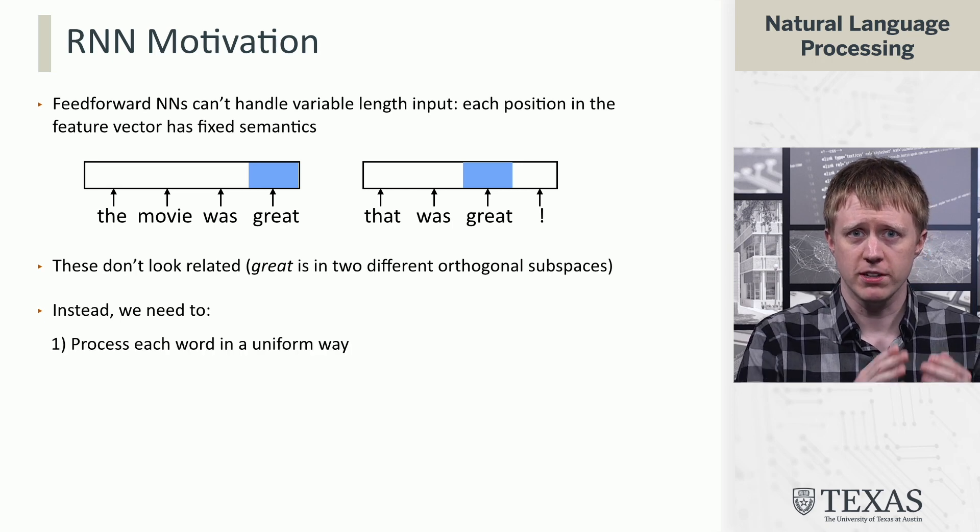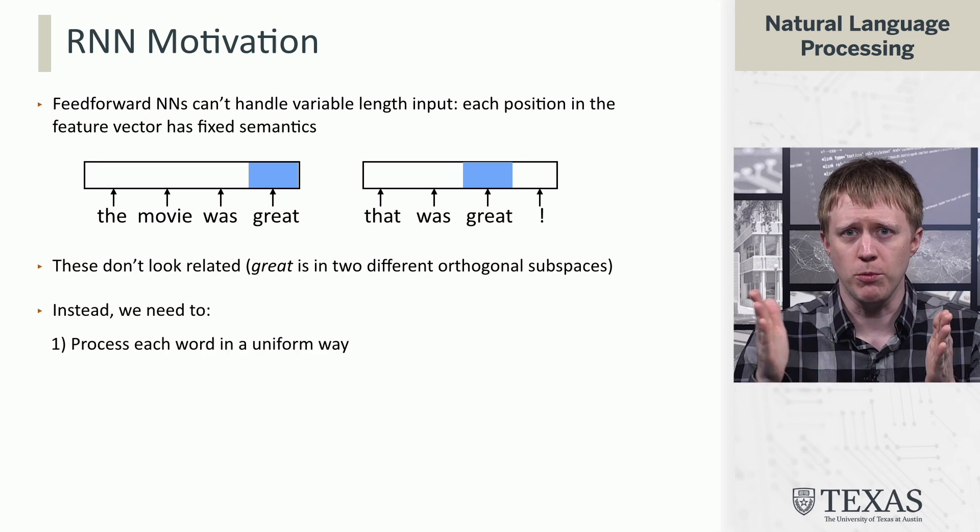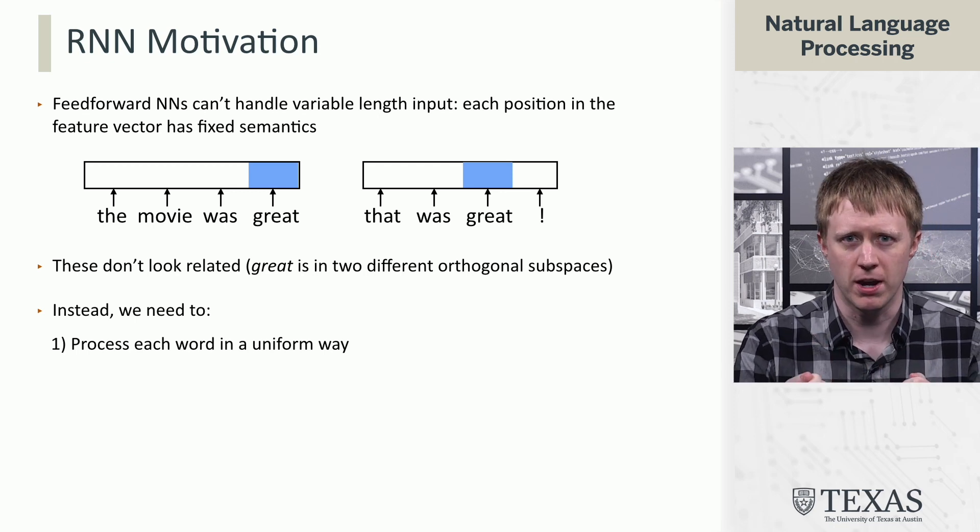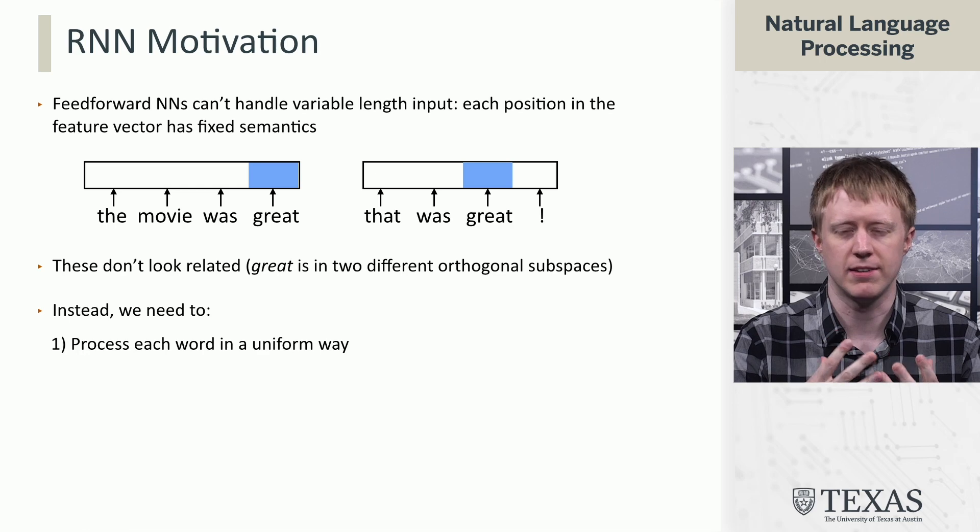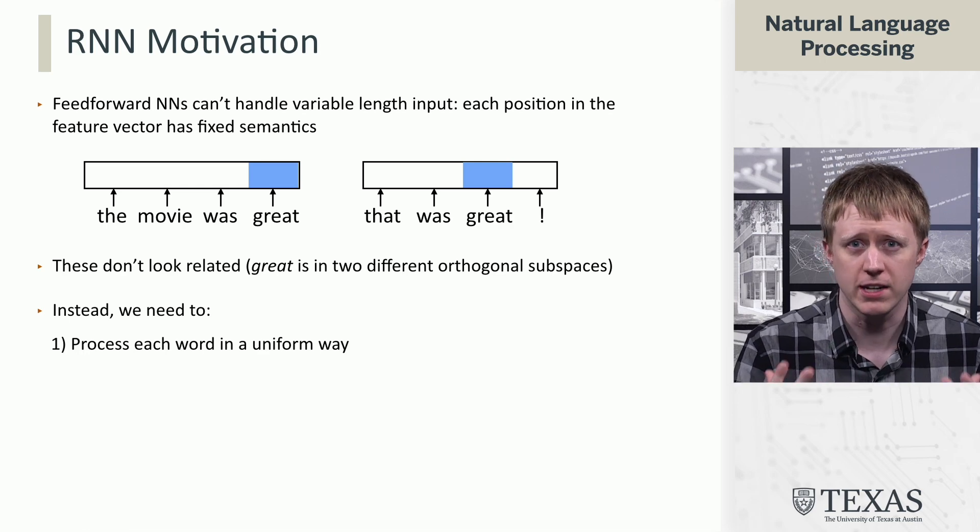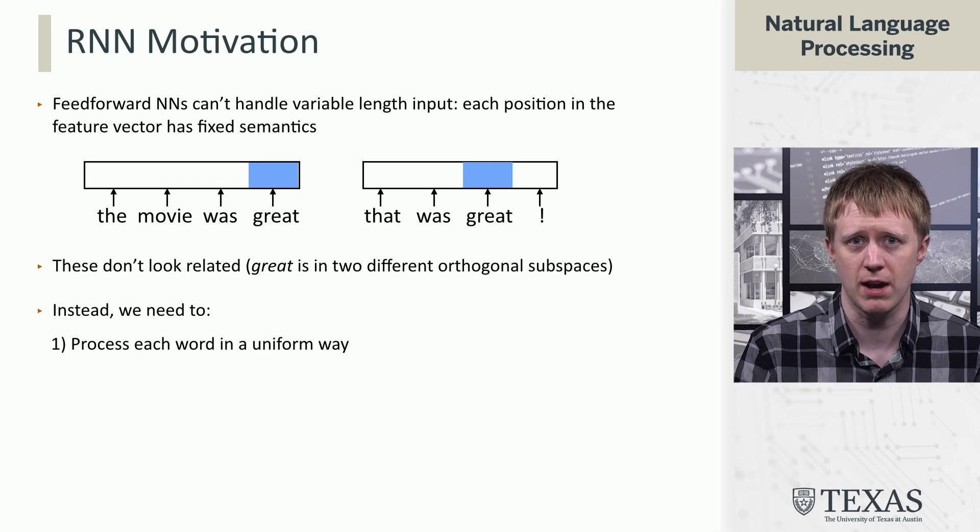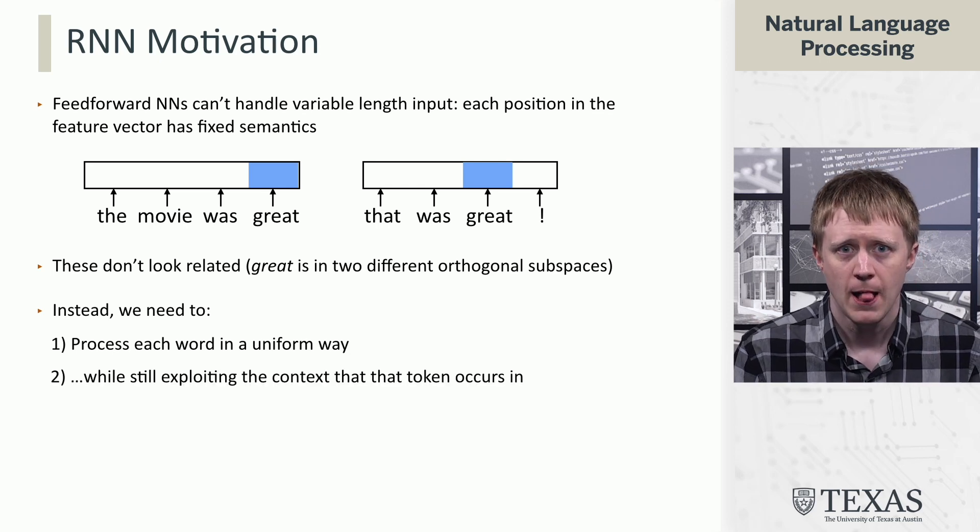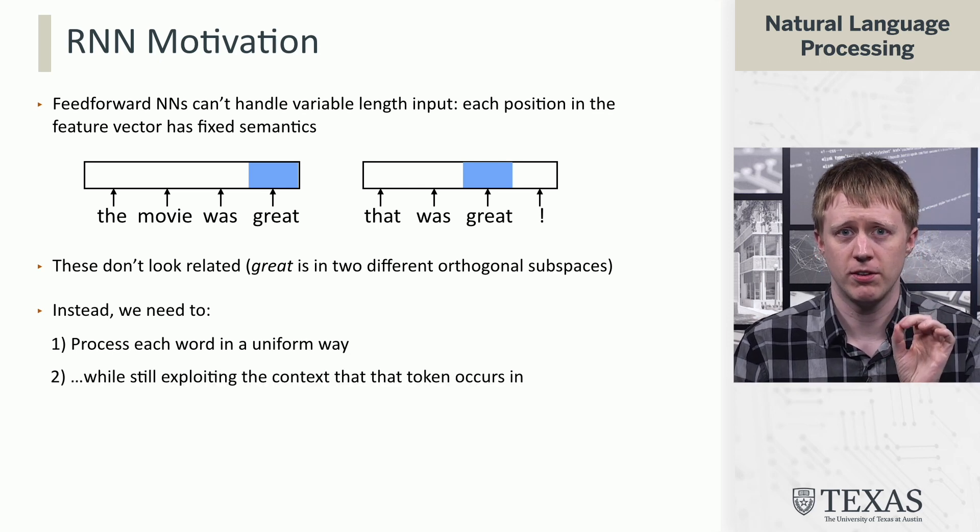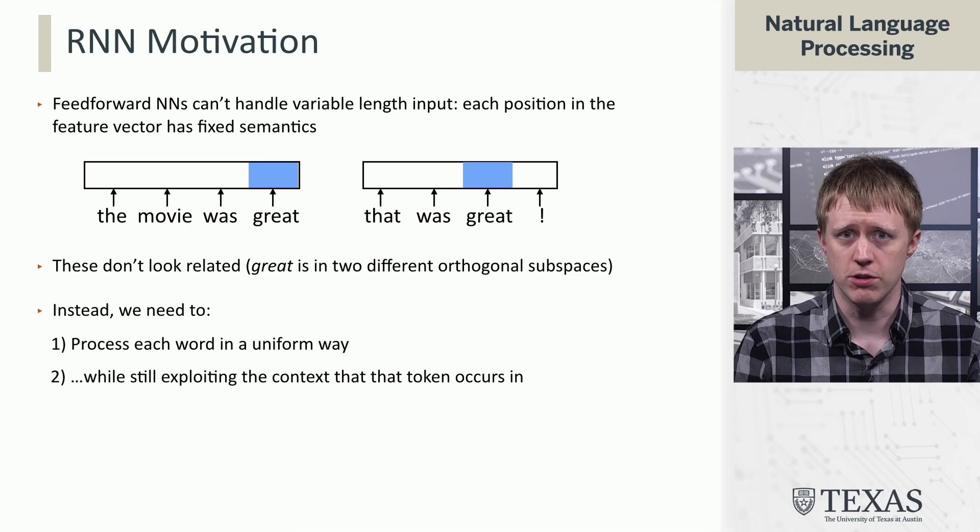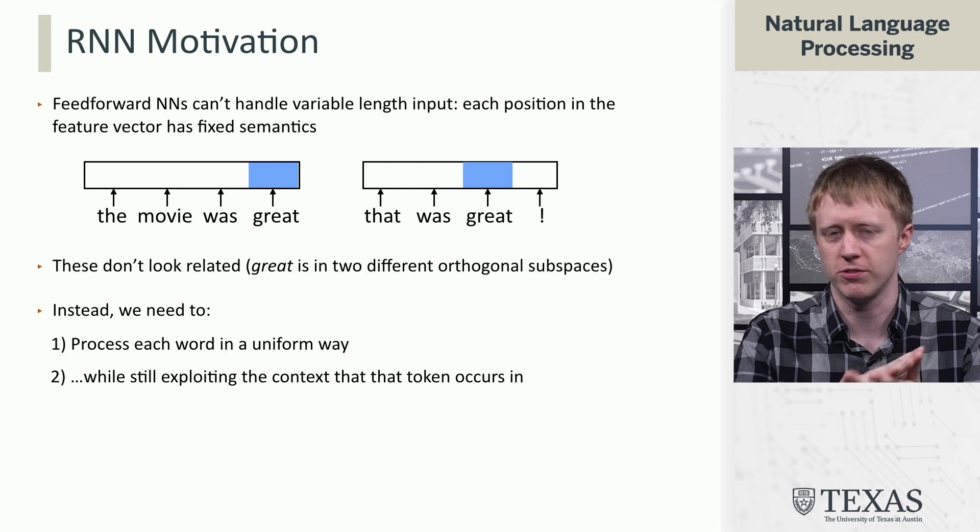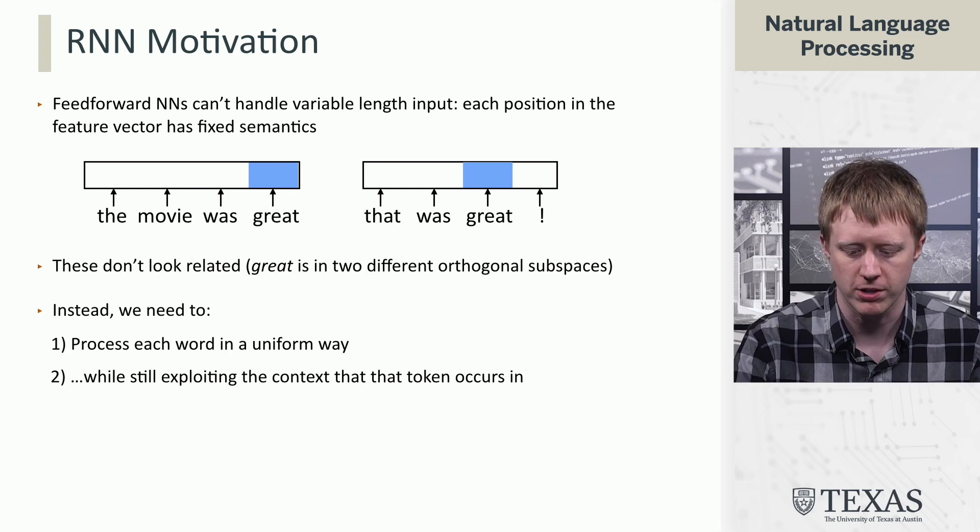That's not what we want. Instead, we want to process all of these words somewhat uniformly. If we're doing something like sentiment analysis or language modeling, knowing that the word 'great' is in the context somewhere is useful. It would be nice to do that without having to observe it in every single position. But we still want to make the function context dependent. We don't want to go as far as a deep averaging network in terms of just erasing all notions of position.